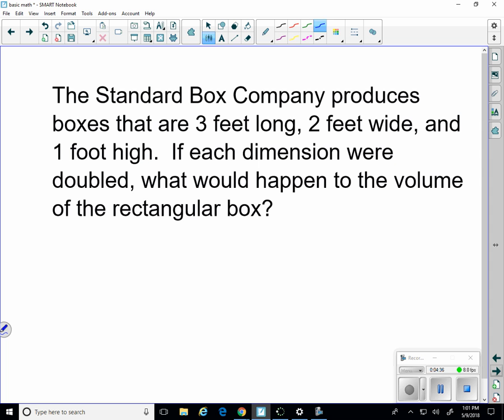So a standard box company produces boxes that are 3 feet long, 2 feet wide, and 1 foot high. If each dimension were doubled, what would happen to the volume of the rectangular box? So the volume right now is 3 times 2 times 1. So 6 cubic feet.